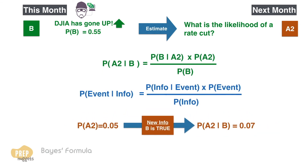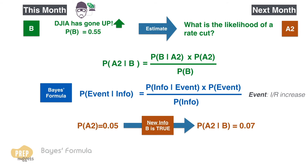This is a demonstration of Bayes' formula, where we update the probability of an event based on new information. The event that we are interested in is the decision to increase interest rates, and the new information that we use to update the probability is the information that the Dow Jones has gone up for the month.